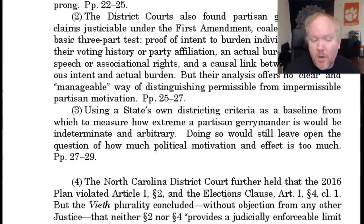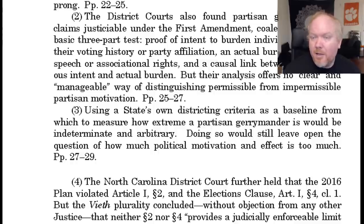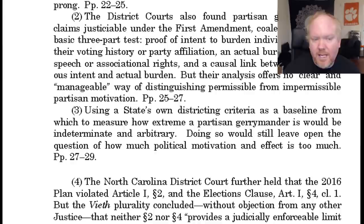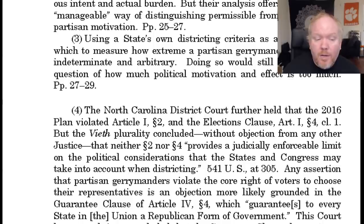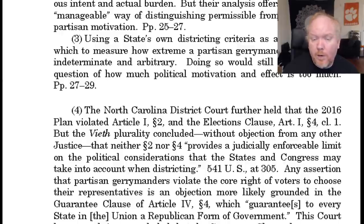Using the state's own districting criteria as a baseline from which to measure how extreme partisan gerrymandering is would be indeterminate and arbitrary — it would still leave open the question of how much political motivation is too much. The state could obviously adopt different districting criteria; if the state can pick a politically gerrymandered map, they can pick criteria that would satisfy that map. The North Carolina District Court further held that the 2016 plan violated Article I, Section 2, and the Elections Clause, Article I, Section 4, Clause 1.